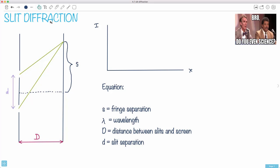Let's now talk about slit diffraction. This happens when light is entering not just one hole or aperture but multiple ones.